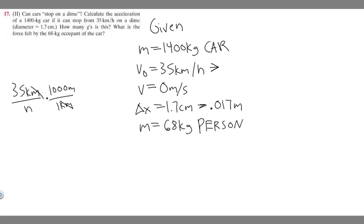That would get rid of the kilometer, and then we know there's 3600 seconds for every one hour, so that will cancel the hours. You just do 35 times 1000 divided by 3600.